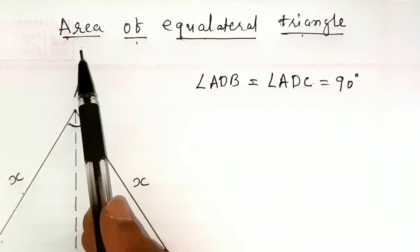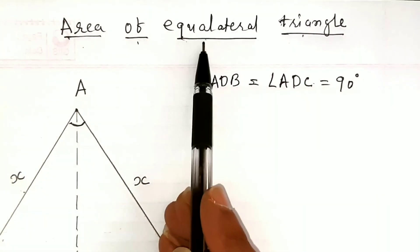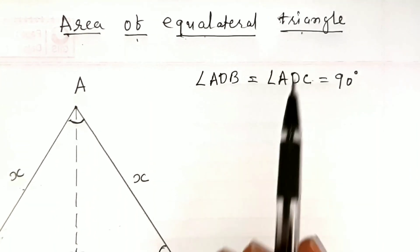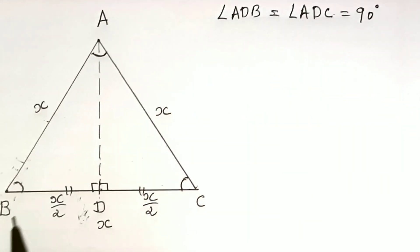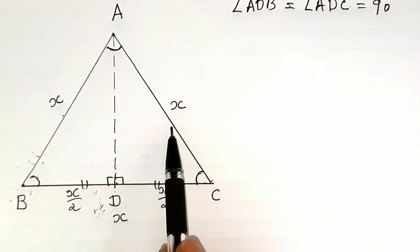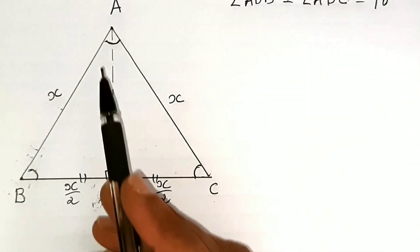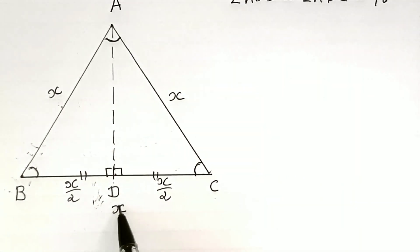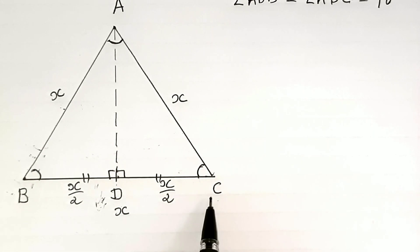Hey guys, today I'm going to teach you how to find the area of an equilateral triangle. Over here I have an equilateral triangle ABC with x equal to the side. AD is our bisector which bisects line BC into two equal parts.